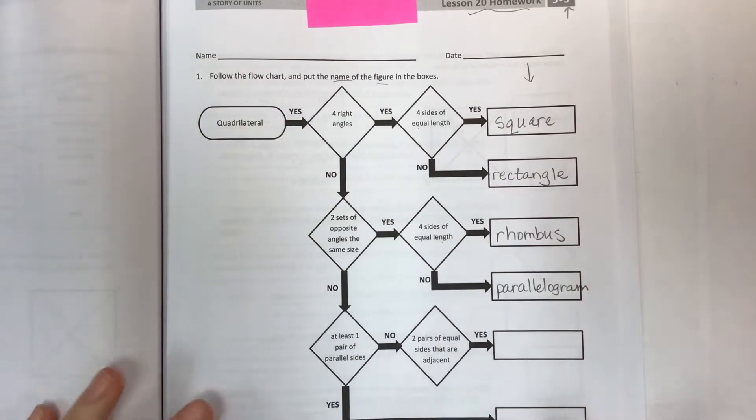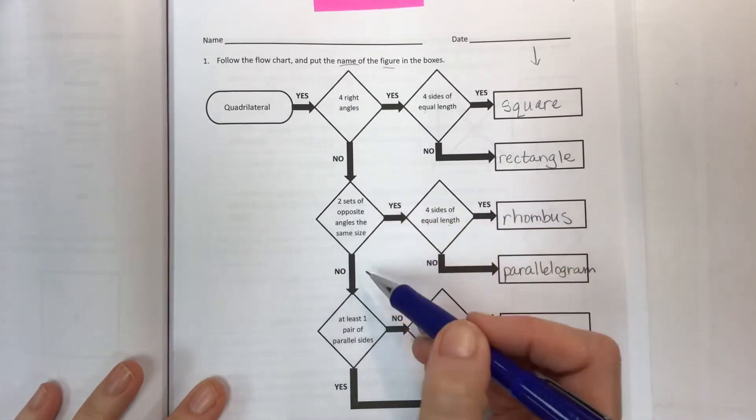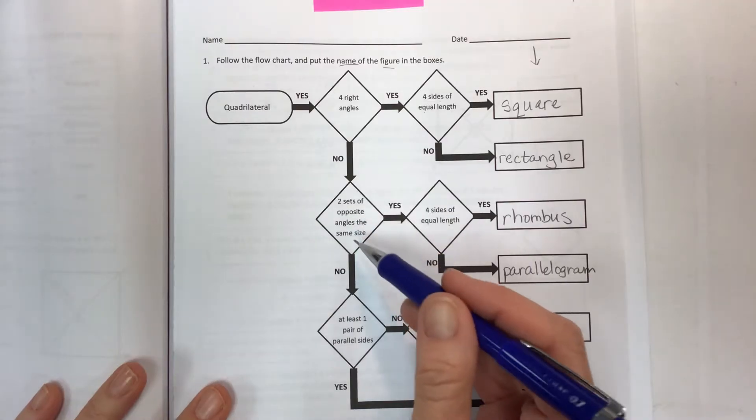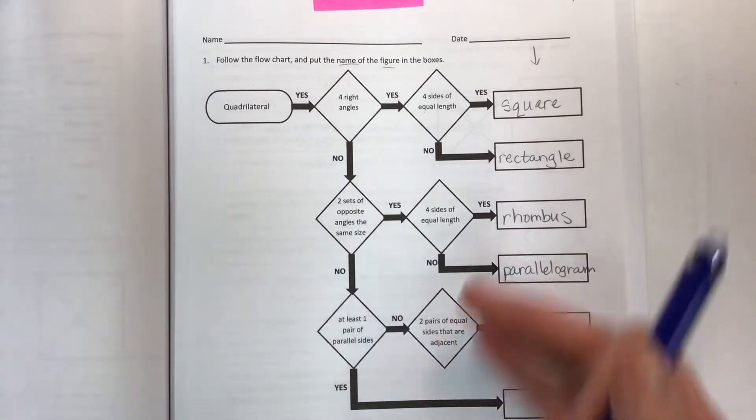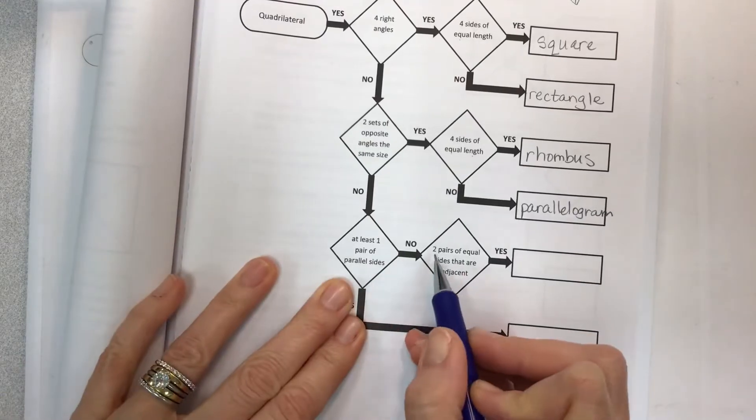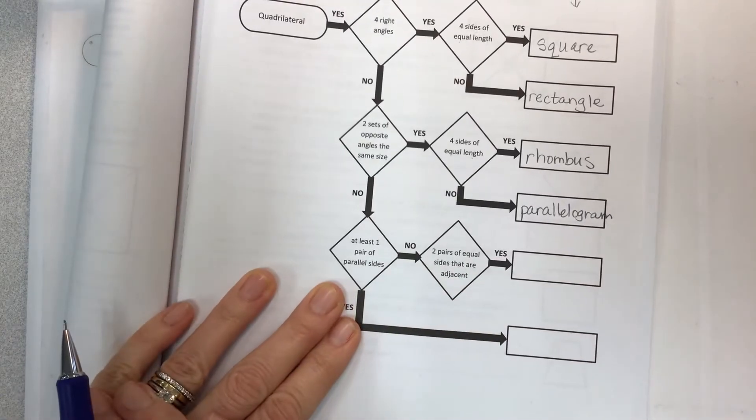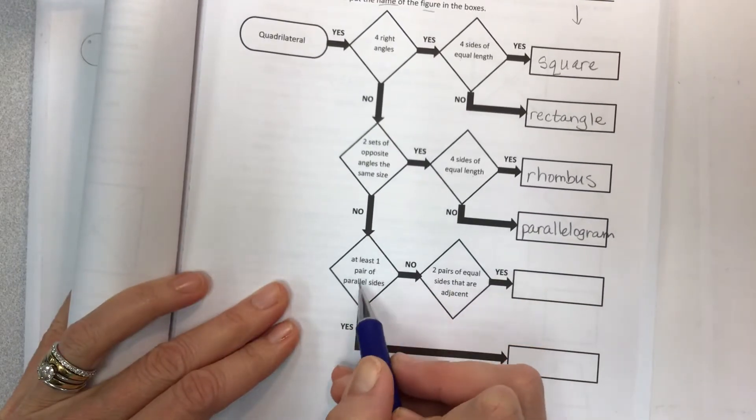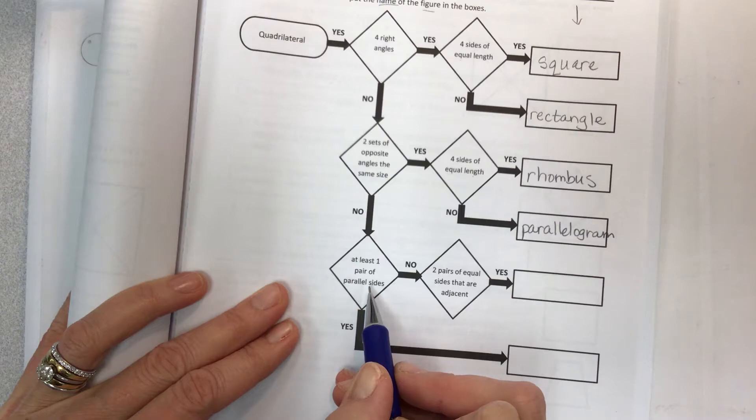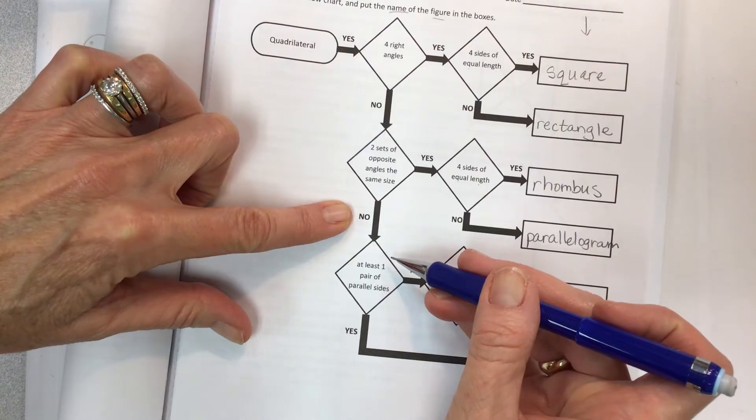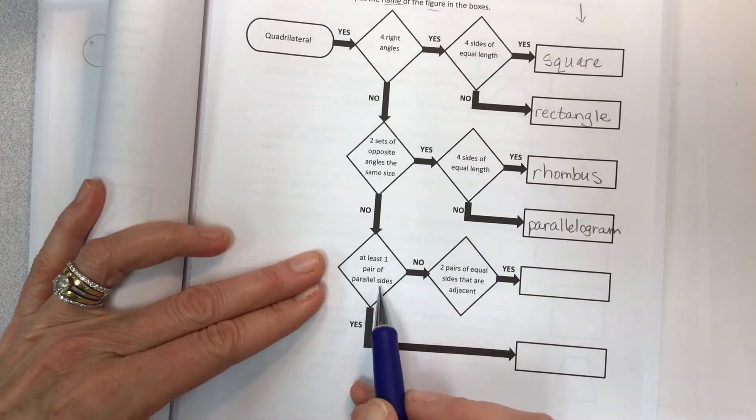So we're narrowing down. Now let's say we look at this description and we say no, those two sets of opposite angles are not the same size. I don't have that attribute. So what do I have then? Well do I have two pairs of equal sides that are adjacent? Now if we have at least one pair of parallel sides...